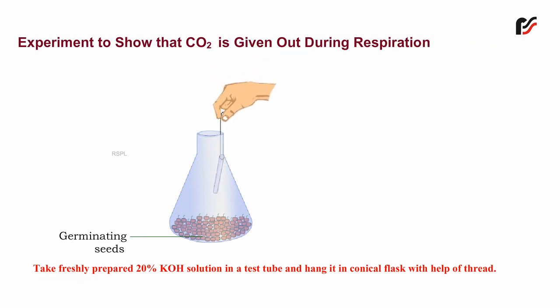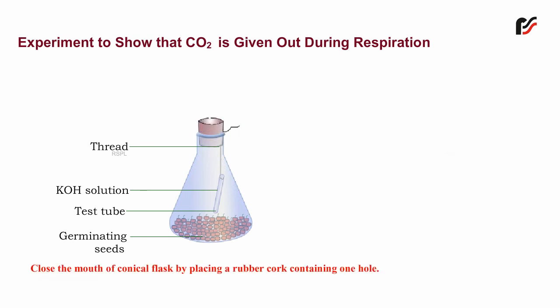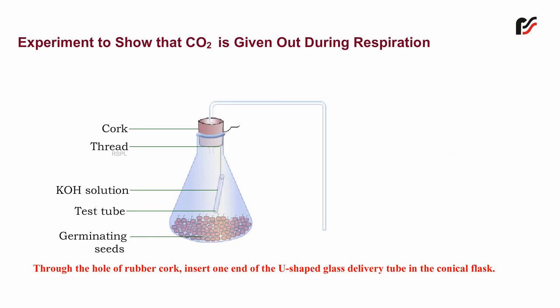Take freshly prepared 20% potassium hydroxide solution in a test tube and hang it inside the conical flask with the help of a thread. Close the mouth of the conical flask by placing a rubber cork containing one hole. Through the hole of the rubber cork, insert one end of the U-shaped glass delivery tube into the conical flask.